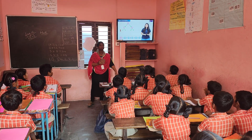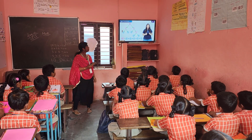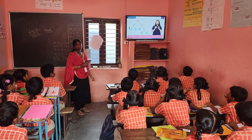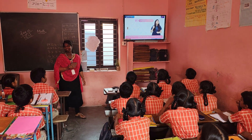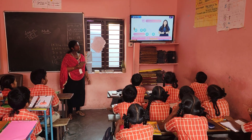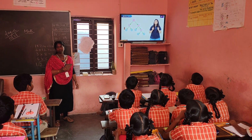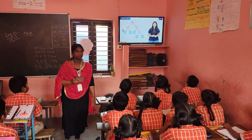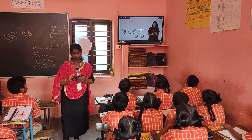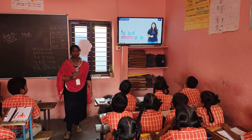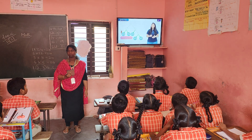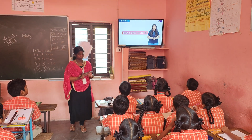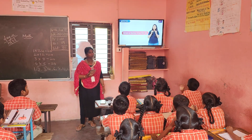Let us now learn how to express a number as a product of its prime factors using a factor tree. A factor tree is a diagram that we use to break a number down into its prime factors. Notice that all the branches of the tree are factors, and the last set of branches are the prime factors.